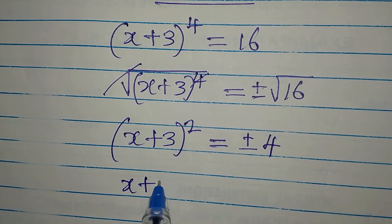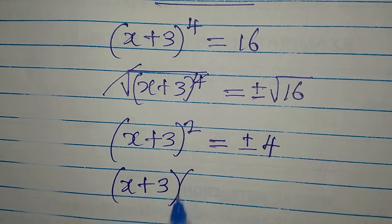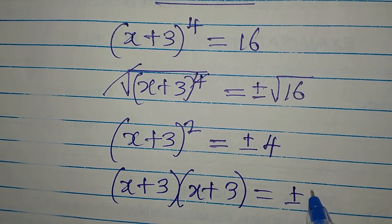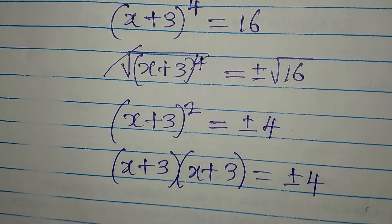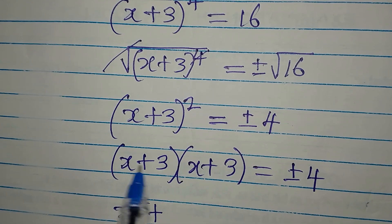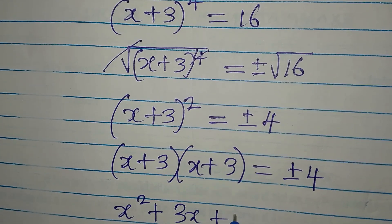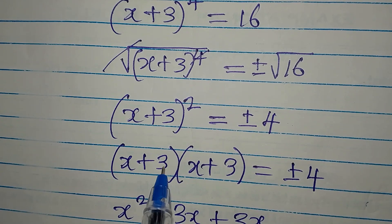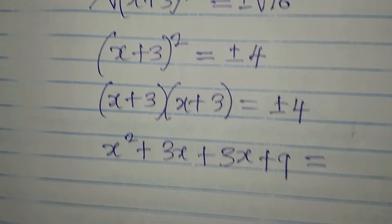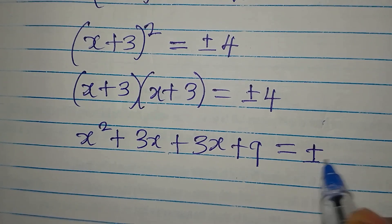Now we have (x + 3), and because of the square here, we're going to have this in two places, and that will be equal to plus or minus 4. Now let us expand: x times x gives x squared, plus x times 3 gives 3x, plus 3 times x gives 3x, then 3 times 3 gives us 9. This is equal to plus or minus 4.